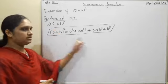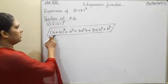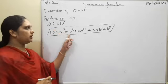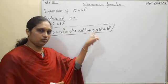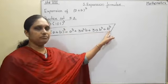It is compulsory to write this. We will write (a+b)³ is equal to a³ plus 3a²b plus 3ab² plus b³.